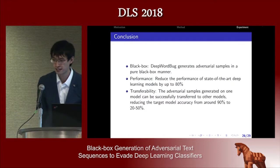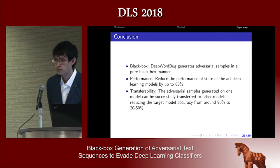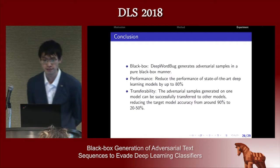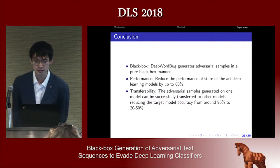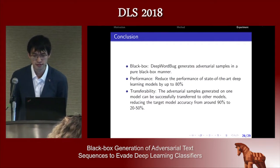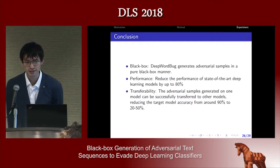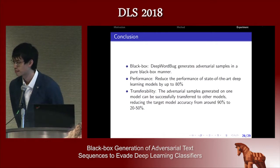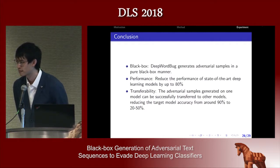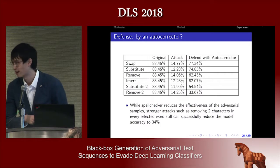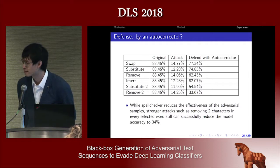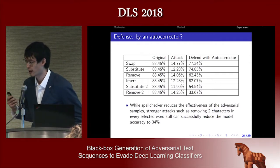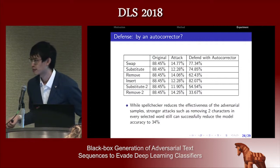Q&A: Regarding the defense using autocorrect, the assumption is that it's one language — English, right? Yes. If you only change the character level, is it easy to detect by a spelling check? Yes, the autocorrector is actually a spelling check. Have you considered adding the perturbation directly in the embedding space so you can map it back? Because we assume black box attack, we don't have any information about the embedding — that's the major reason. But you could also use transferability for that.